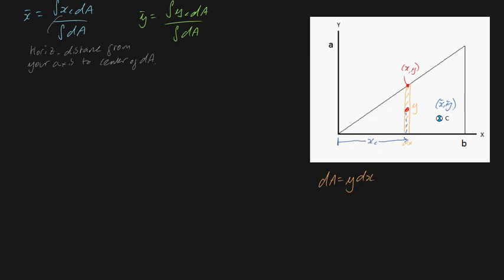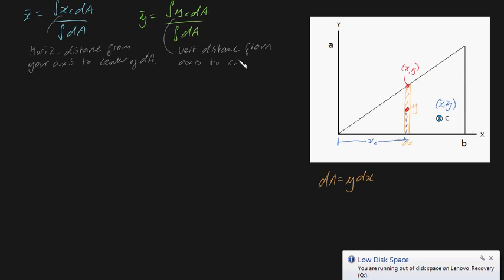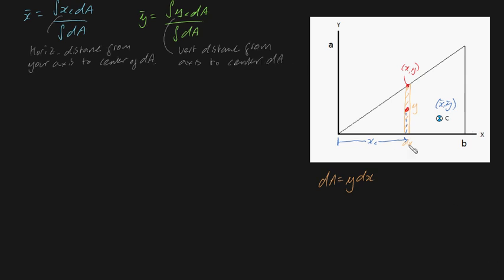Now yc, very similar, is going to be the vertical distance from your axis to your center of your small element of area, da. So work with me. This will be the value of yc. It will be from here to yc to here, and it will have a height corresponding to this red dot just here, which I've drawn. So these are the values of xc and yc.